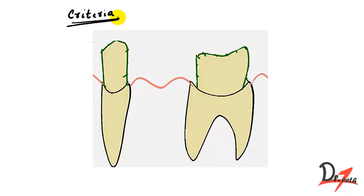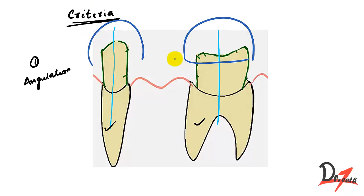The first one is the abutment angulation. The angulation of the abutment plays a very important role in deciding which kind of retainer we are going to use. For example, in this case, the abutments are parallel to each other, so a full veneer retainer can be planned because we can get a single path of insertion. Both the retainers can be placed like so and they'll have a single path of insertion.